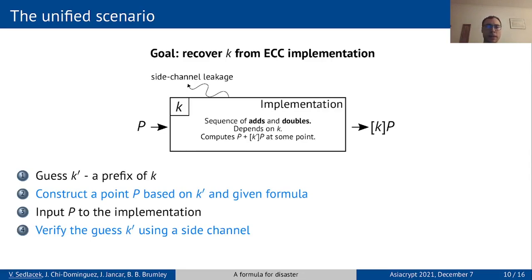The side channel then tells us if our guess was correct or not. So in this way we learn a prefix of k and we can repeat the whole process bit by bit until we learn the whole private key. The specific attacks differ only in steps 2 and 4, while the rest stays the same.